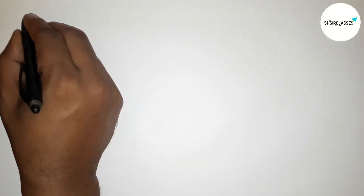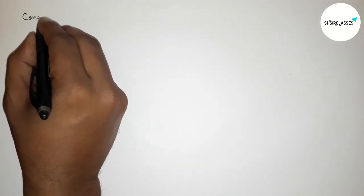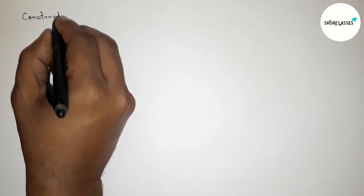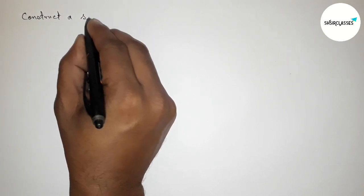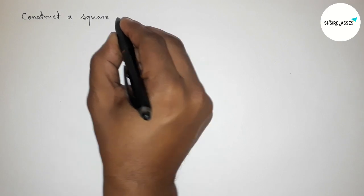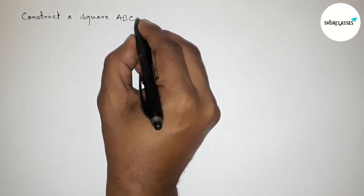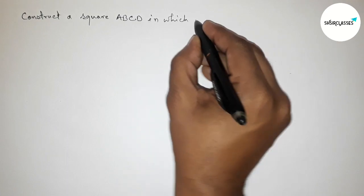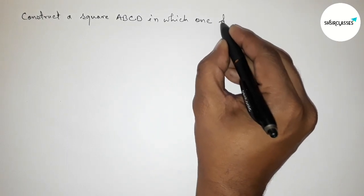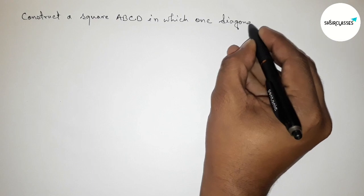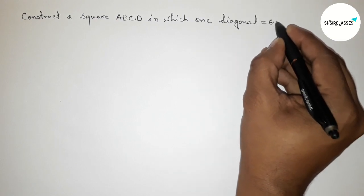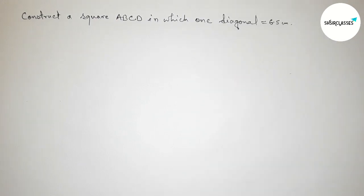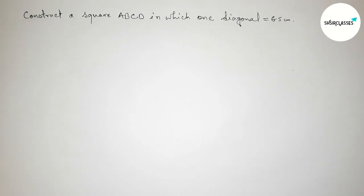Hi everyone, welcome to essay share classes. Today in this video we have to construct a square ABCD in which one diagonal equals to 6.5 centimeter. So please watch the video till the end. So let's start the video.